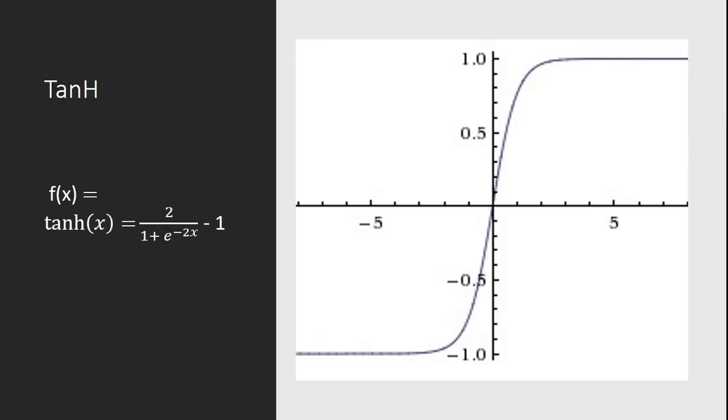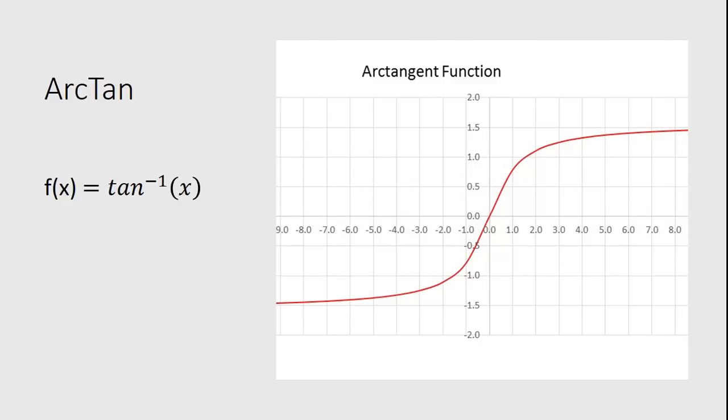We have the tanh activation function, which contains the function from minus 1 to 1 and is similarly useful to the sigmoid function. You can try out tanh and sigmoid and check which accuracy is better and use it accordingly. This is the tanh activation function: 2 by 1 plus e power minus 2x minus 1. And this is the arctan function, just the tan inverse of x. This contains the number between somewhere around minus pi by 2 to plus pi by 2. This is also an alternative to sigmoid or tanh and does a similar task.